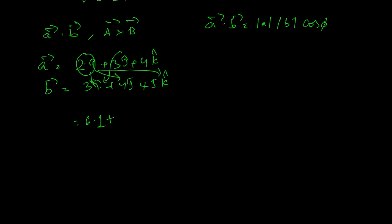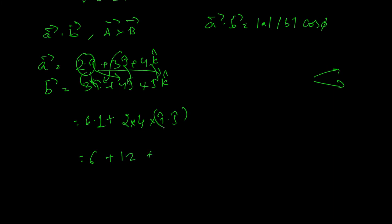Continuing the dot product calculation: since all cross-unit-vector terms (î·ĵ, etc.) are zero, we only keep the corresponding î·î, ĵ·ĵ, k̂·k̂ terms. So A-bar · B-bar = (2×3) + (3×4) + (4×5) = 6 + 12 + 20 = 38.